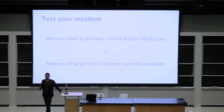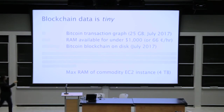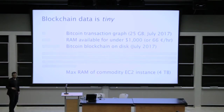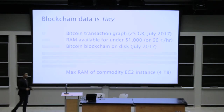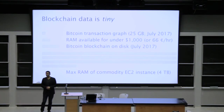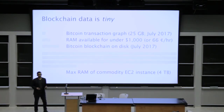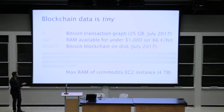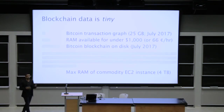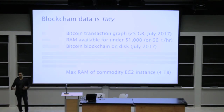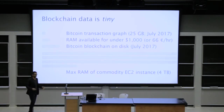We're used to thinking of blockchain data as big data, but it's actually tiny. The Bitcoin blockchain on disk today is something like 150 gigabytes, but with an optimized in-memory representation you only need about 25 gigabytes. For a mere 66 cents per hour you can get a 64 gigabyte instance from Amazon, and the maximum available is as much as 4 terabytes. Not only is vertical scaling sufficient today, for the foreseeable future it will remain sufficient because Amazon's memory growth is outpacing blockchain growth.